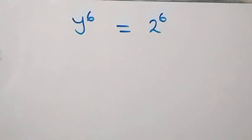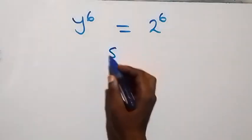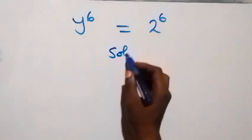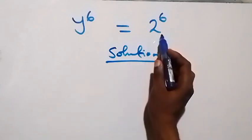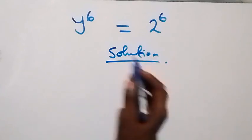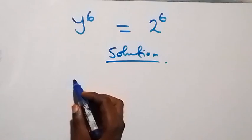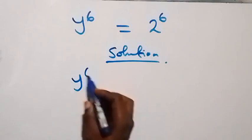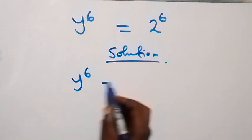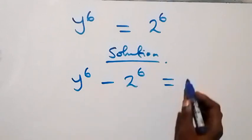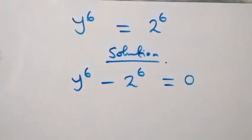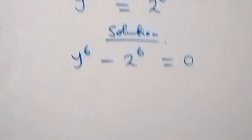Hello, you are welcome. How to solve this nice math problem. What is given — let's take 2 raised to power 6 to the left side, and we have y raised to power 6 minus 2 raised to power 6 equals to zero.